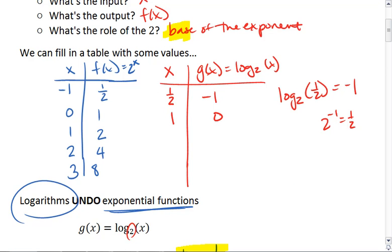If we plug in 1, we get 0. And that means that log base 2 of 1 is 0, because 2 to the 0 is 1.